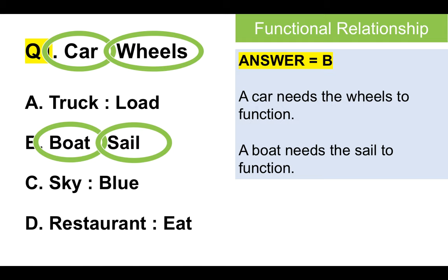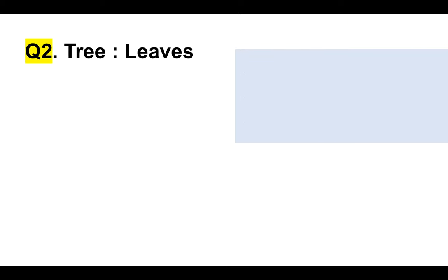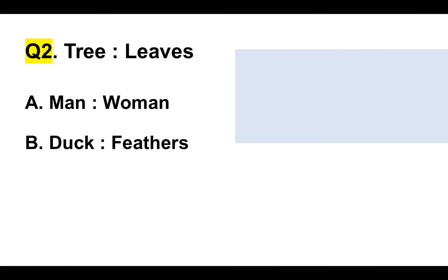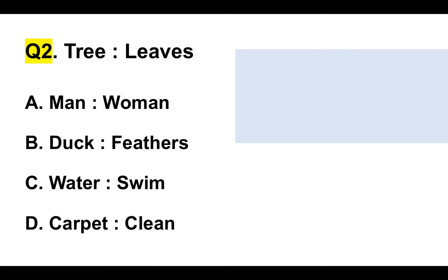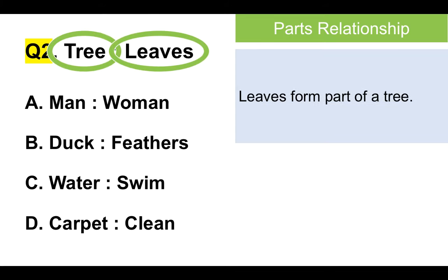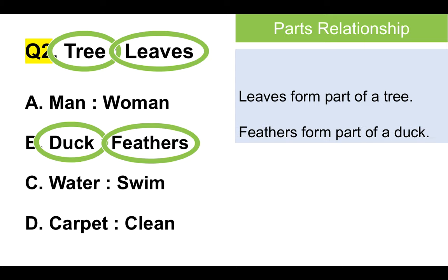It's very simple once you understand the need to look for that relationship. Let's take a look at one more. Question two: tree and leaves. Is it A, man and woman; B, duck and feathers; C, water and swim; or D, carpet and clean? The relationship is a parts relationship, which means leaves form part of a tree, and feathers form part of a duck. So the answer is B.